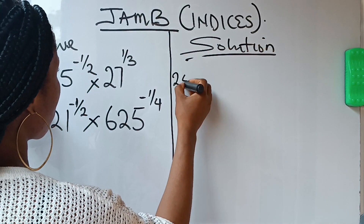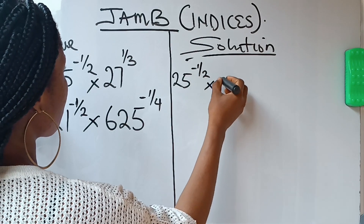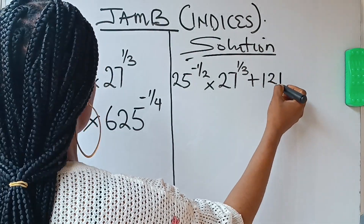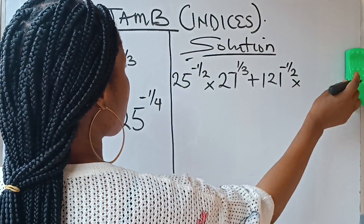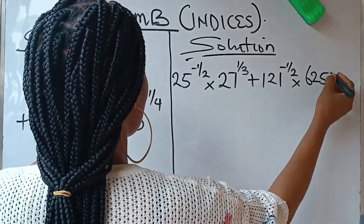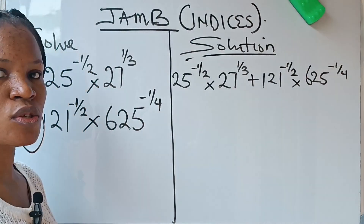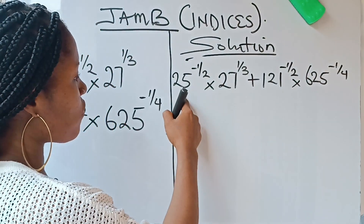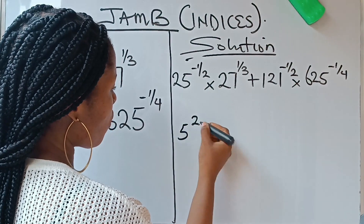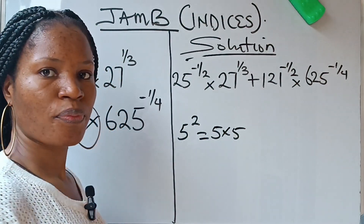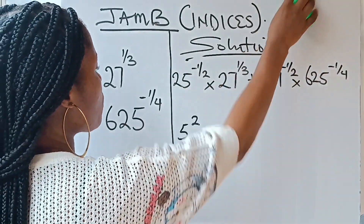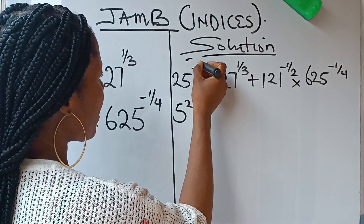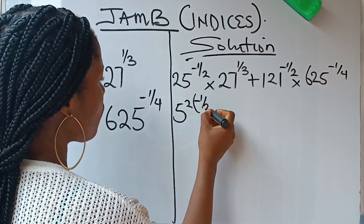We have 25 raised to the power of minus half times 27 raised to the power of 1 over 3, plus 121 raised to the power of minus half times 625 raised to the power of minus 1 over 4. Let me reduce each of them to their lowest base. So 25 is the same thing as 5 raised to the power of 2, which is 5 times 5. I'll now write this as 5 raised to the power of 2, remembering that it's already raised to the power of minus 1 over 2.